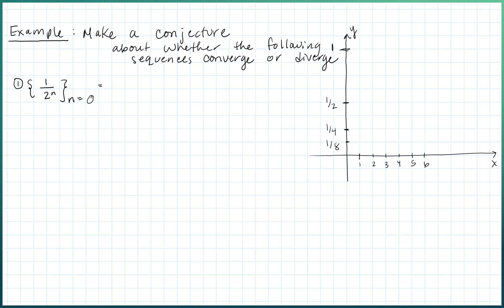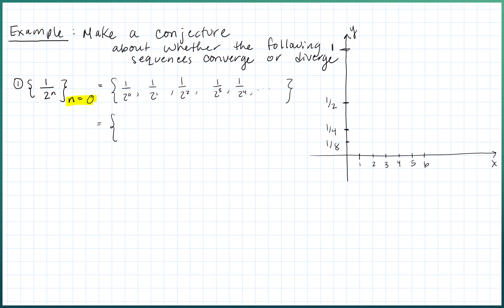For our first sequence, let's look at 1/2^n starting at n equals zero. Writing out the first few terms: when n equals 0 we get 1, then 1/2, 1/4, 1/8, 1/16, and so forth. Since the index starts at zero, the ordered pairs to plot are (0,1), (1, 1/2), (2, 1/4), (3, 1/8), (4, 1/16).